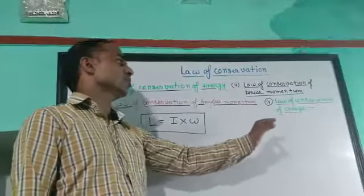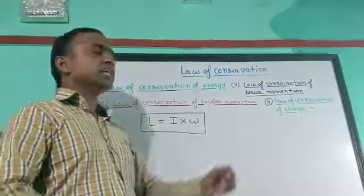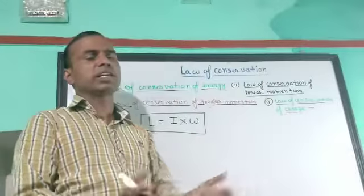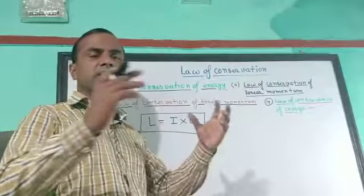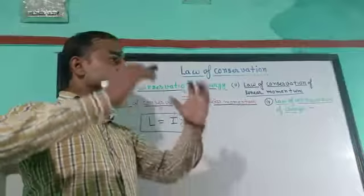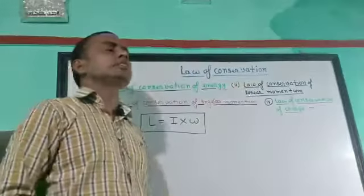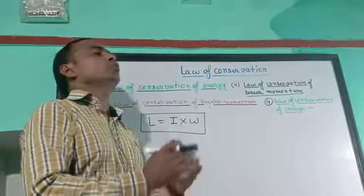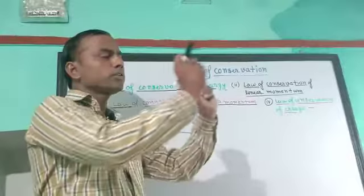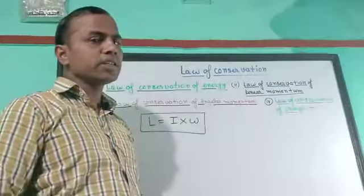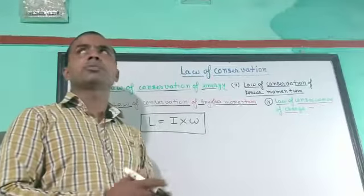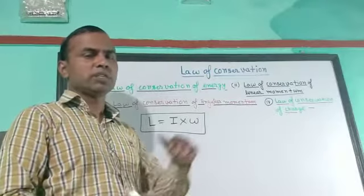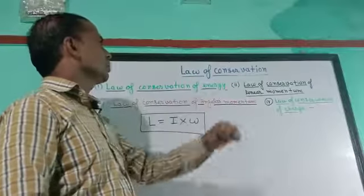The law of conservation of charge states that the total charge of any body or system does not change — it remains unchanged. Charge can neither be created nor destroyed; it can only be transferred from one body to another body.